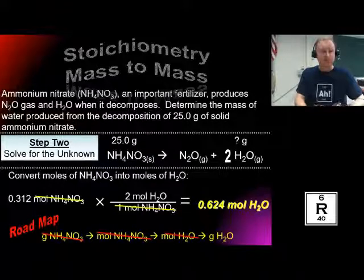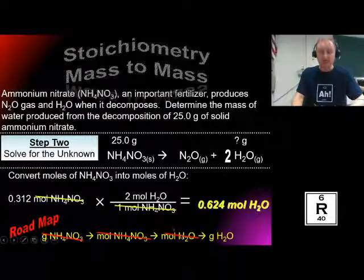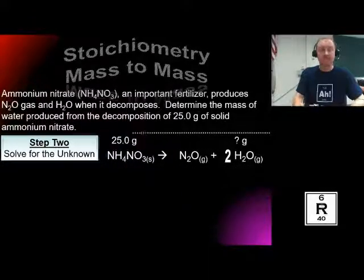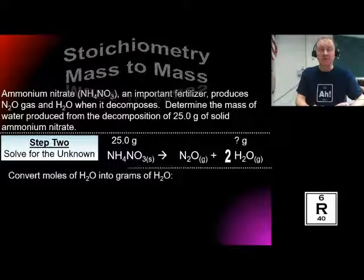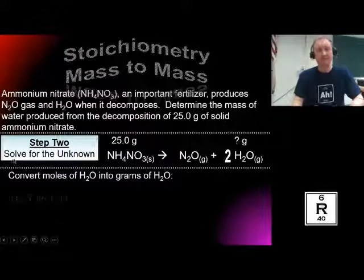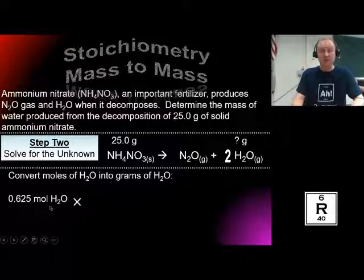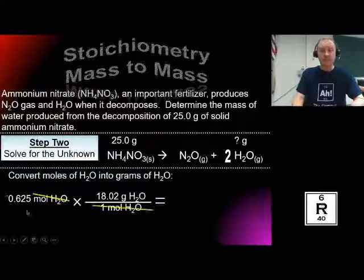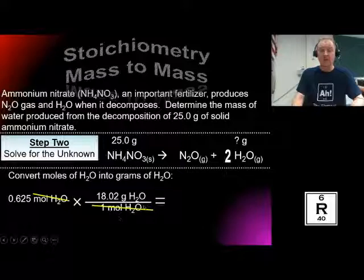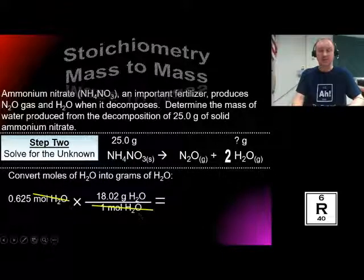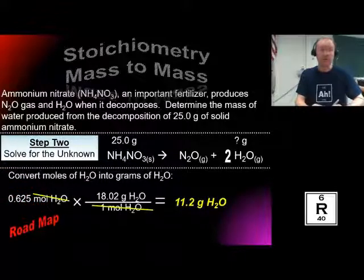I check my roadmap — I'm now in moles of water, but that's not my final answer. The problem asks for the mass, so I need to convert into grams of water. Since I know moles of water, I can convert using the molar mass of water: two hydrogens plus one oxygen. So 0.624 moles of water multiplied by 18.02 grams per mole — the moles cancel — gives me 0.624 times 18.02 grams of water. The final answer is 11.2 grams of water.